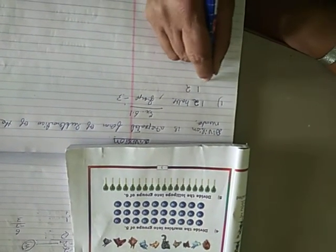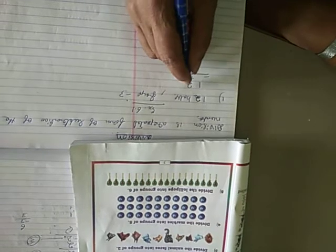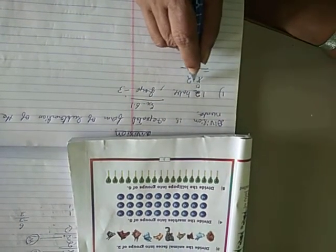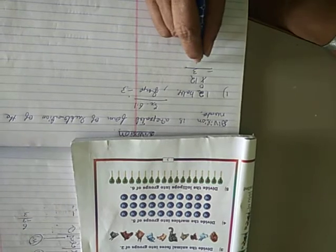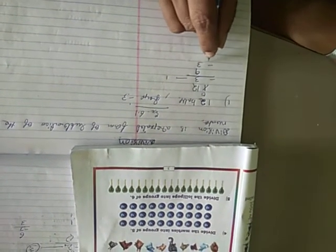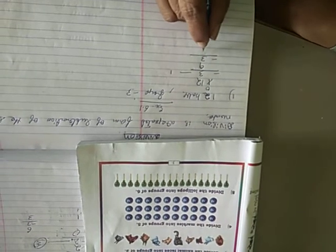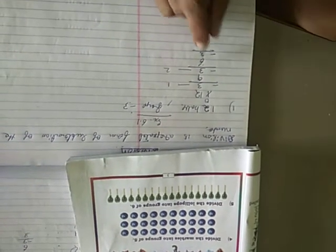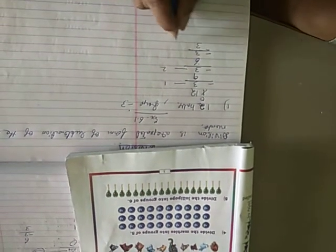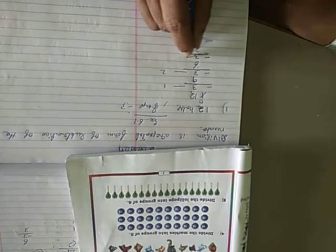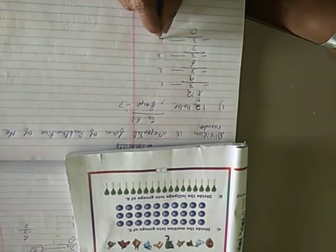12 minus 3. From 2, 3 will not go, so you will borrow. This will become 12. 12 minus 3 is 9. This is 1. Minus 3 again, 9 minus 3 is 6. Again minus 3, 6 minus 3 is 3. This is 2 times. Again minus 3, 3 minus 3 is 0. This is third time, fourth time.